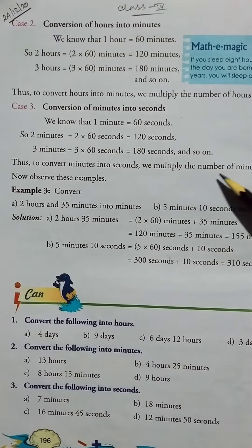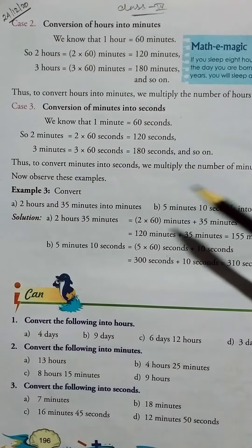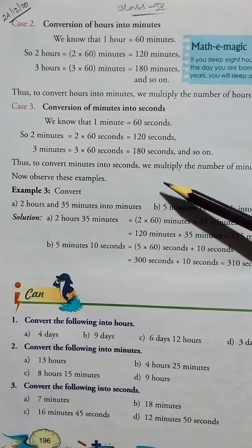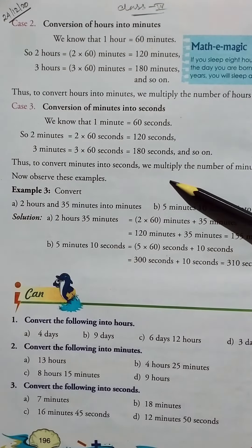3 minutes equals 3 into 60 seconds, which equals 180 seconds, and so on. Thus, to convert minutes into seconds, we multiply the number of minutes by 60.